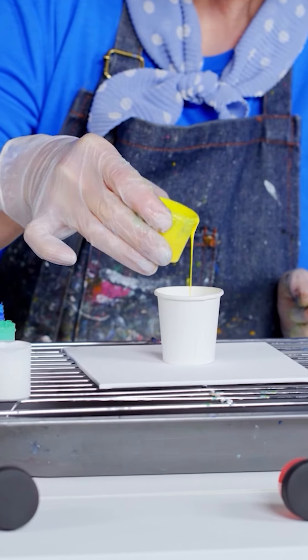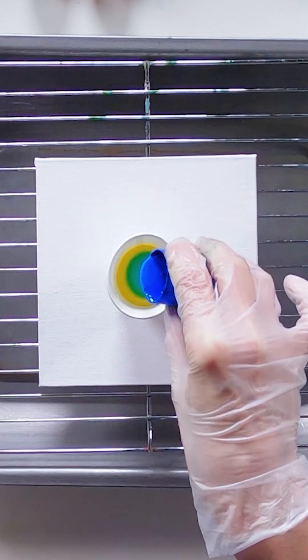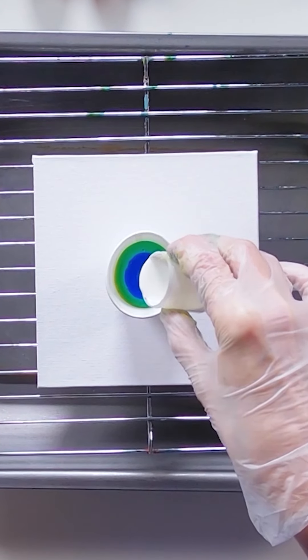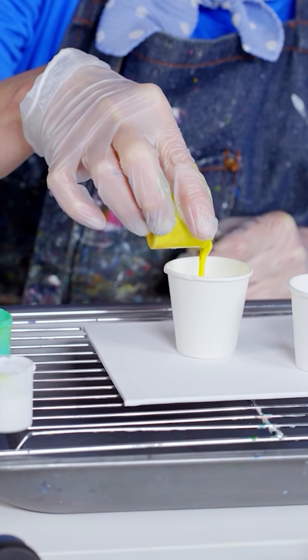Decide which colors you'd like to use and pour a little of each color one by one until the cup is half full. Repeat the process so you have two identical cups of color.